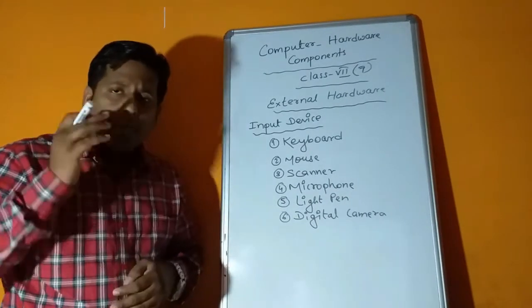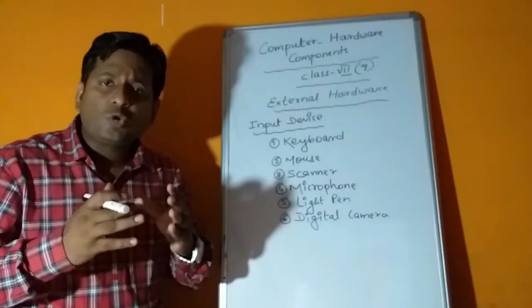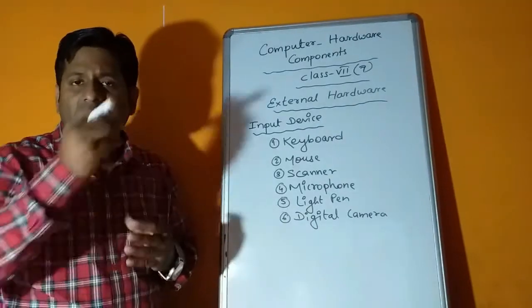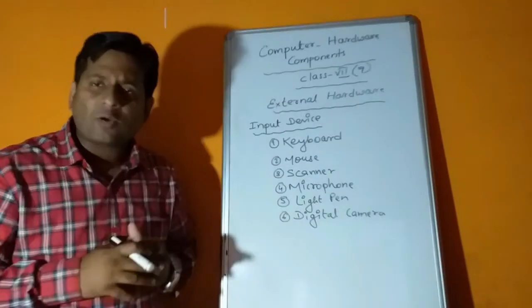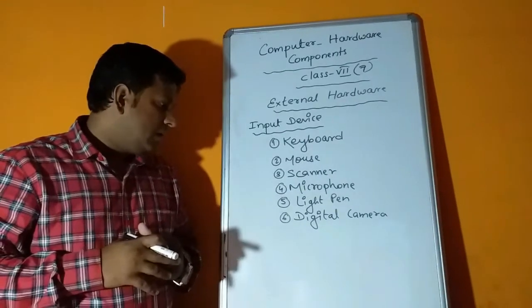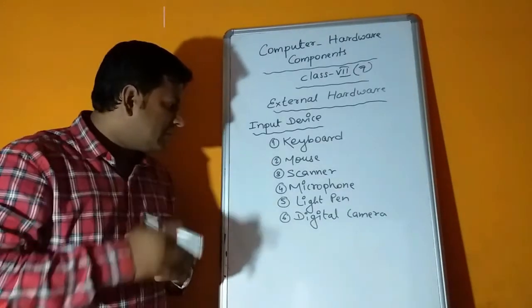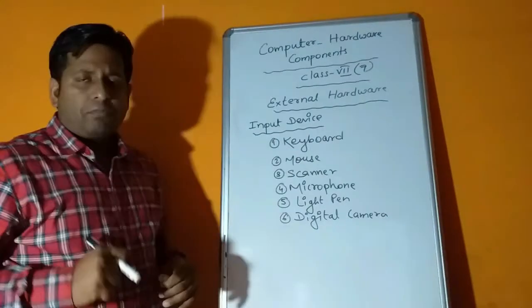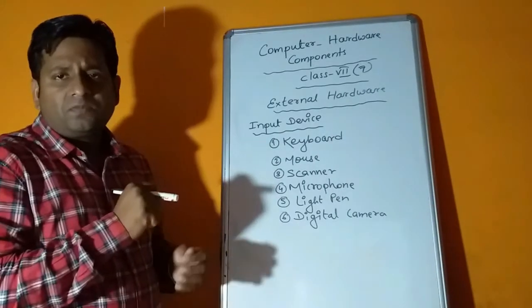Fourth one is microphone. Microphone is used to record our voice. We can record our voice to the computer with the help of microphone.